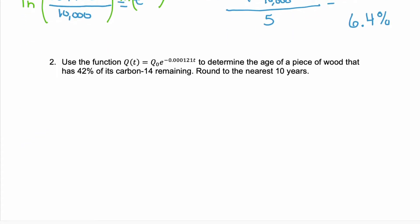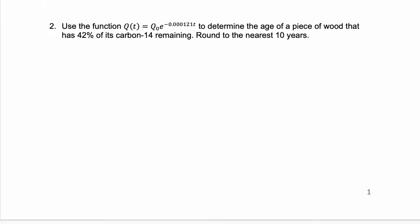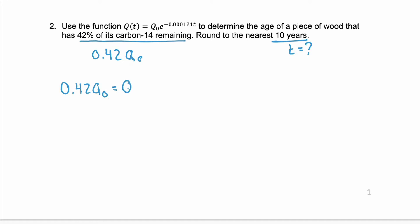Let's look at another example. Here we have the function q(t), and we're going to use it to determine the age of a piece of wood that has 42% of its carbon-14 remaining. We'll round to the nearest 10 years. We know t is what we need to find, and we have 42% remaining — that is 0.42 of that initial amount. So q(t) equals 0.42·q₀, which equals q₀·e to our exponent with unknown t.